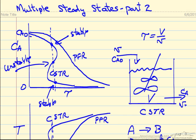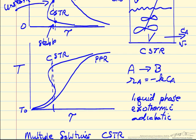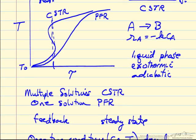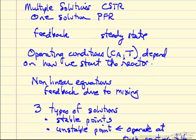So we're using tau as the space time, the volume over the volumetric flow rate into the reactor, first order reaction, exothermic, adiabatic, and we mentioned that we'll have multiple steady states.